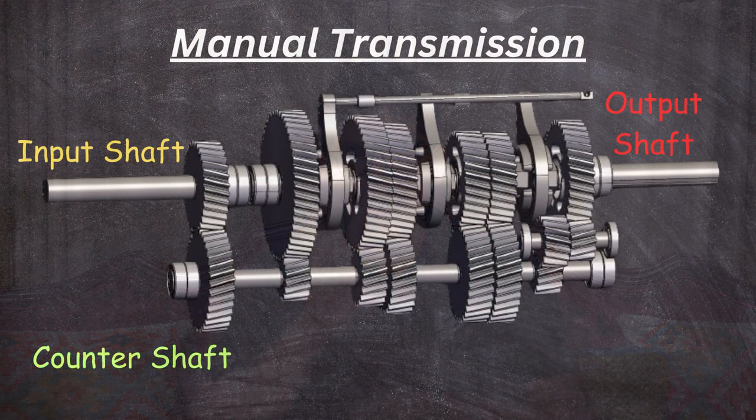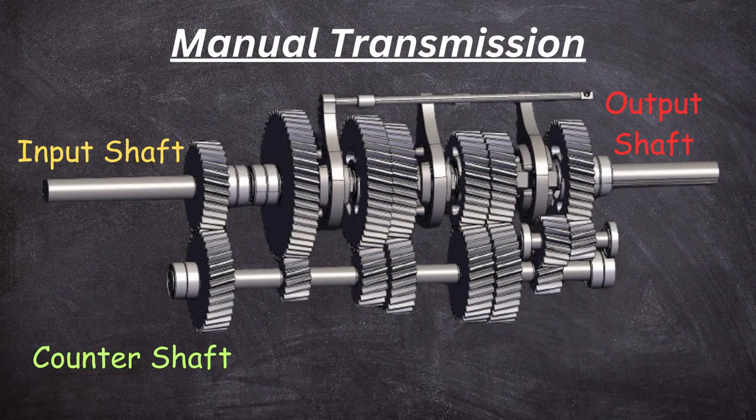The transmission system mainly has three shafts: the input shaft, the output shaft, and the counter shaft. All of these use helical teeth gears for quieter operation, except the reverse gear which usually uses straight teeth. From the input shaft, this gear is connected to the counter shaft.